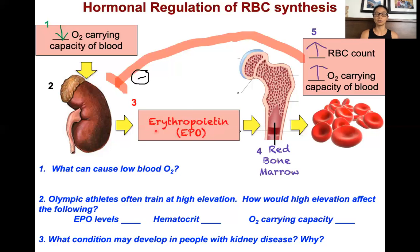This hormone will circulate the body and bind to the target tissue, the red bone marrow. The red bone marrow, upon binding EPO, will then start to generate red blood cells. The red blood cell count will increase at step five as a response to this hormonal pathway, and hopefully increase the oxygen carrying capacity.